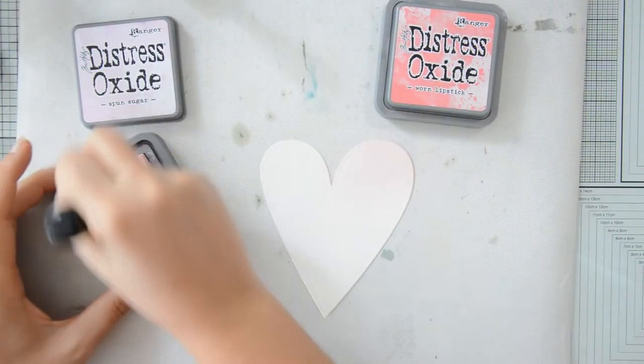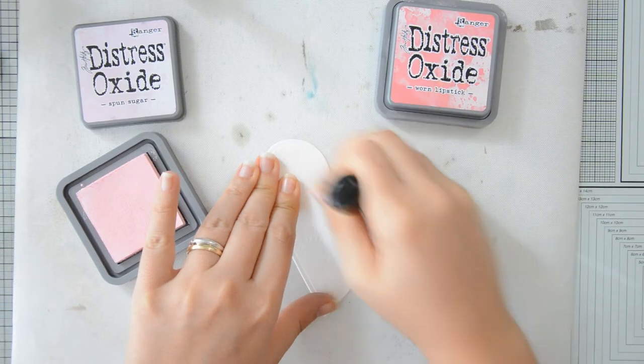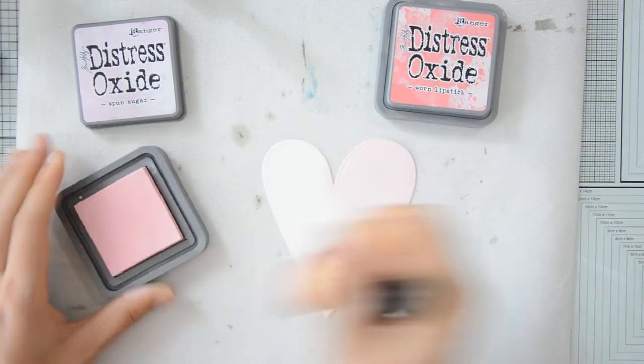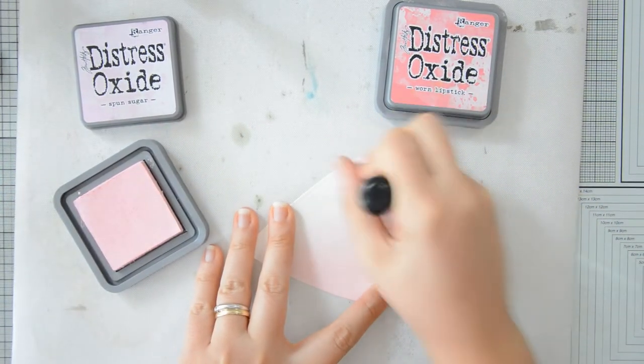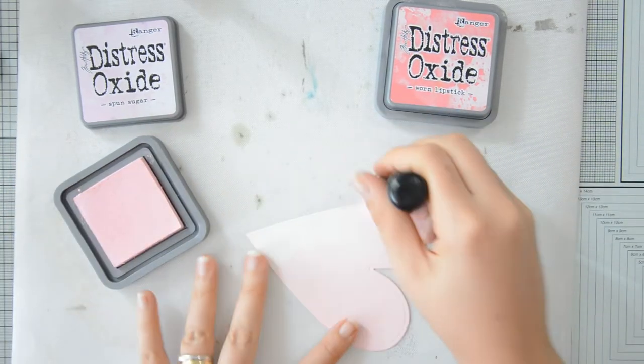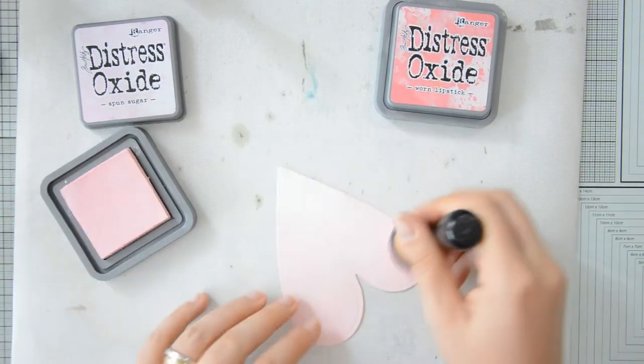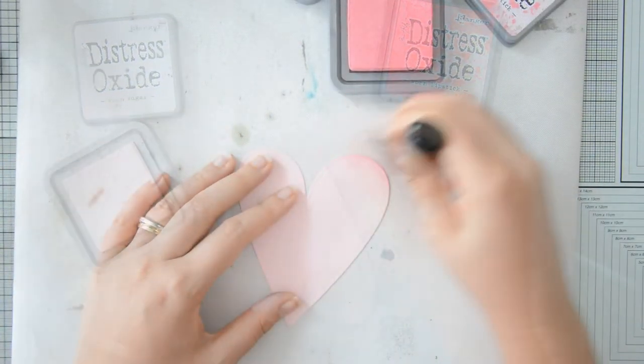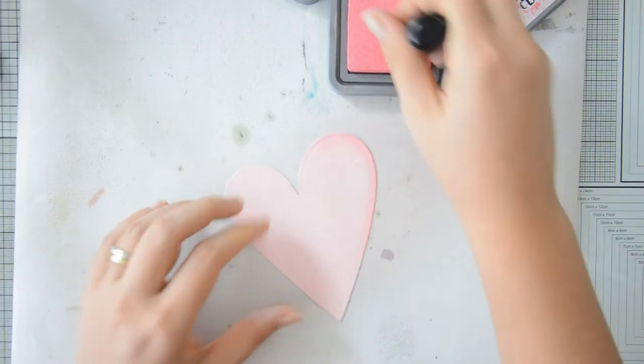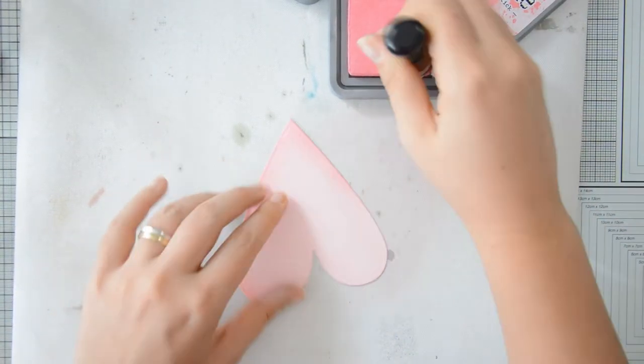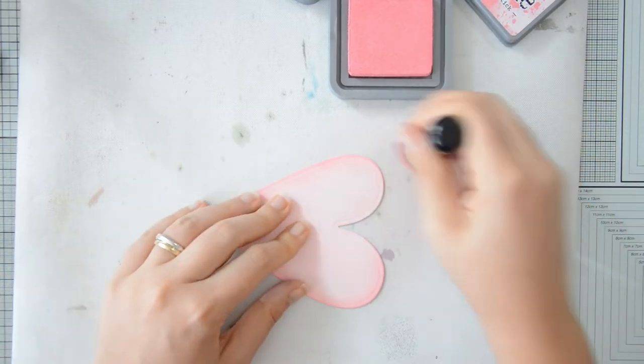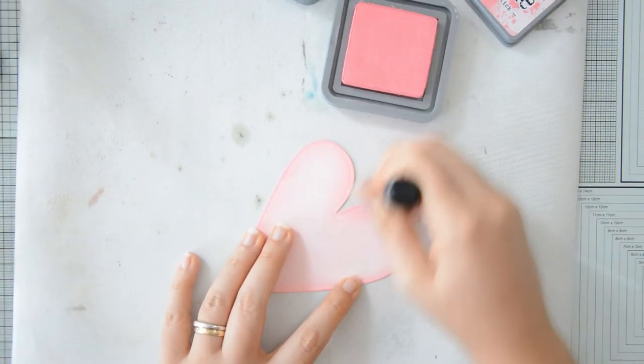For my heart die cut, I am also using distress oxides, but this time I am blending them using a mini ink blender. I first coated the entire area with Spun Sugar Distress Oxide and then I came in with Worn Lipstick Distress Oxide and with that I sponged only the edges of the heart in order to create dimension and more interest on my die cut.